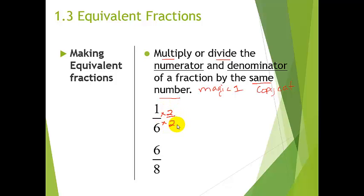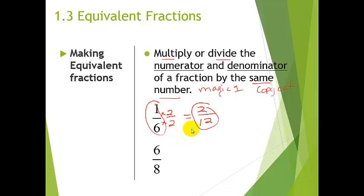So here we go: 1 times 2 is 2, and 6 times 2 is 12 — so I've just made an equivalent fraction. If the homework or book work asks you to make equivalent fractions of 1/6, choose simple numbers like 2, 3, or 4. You could pick larger numbers, but that's just more work, and we want to keep things as simple as possible.